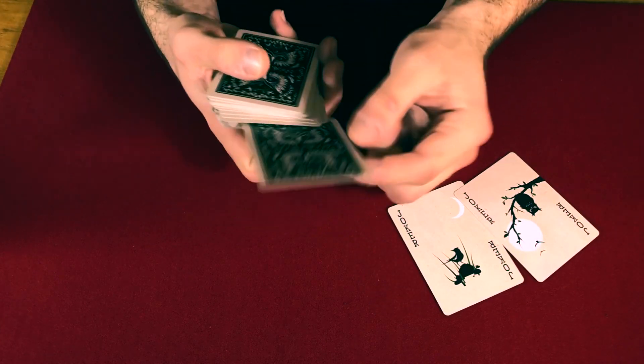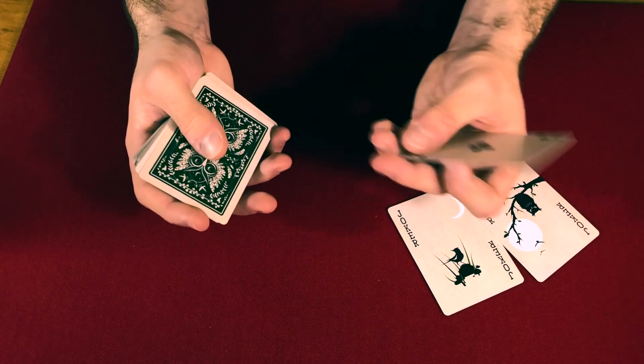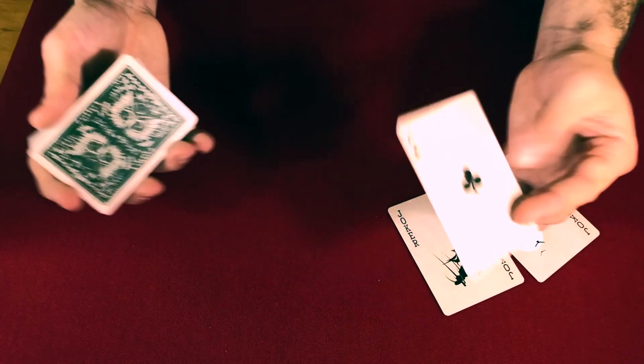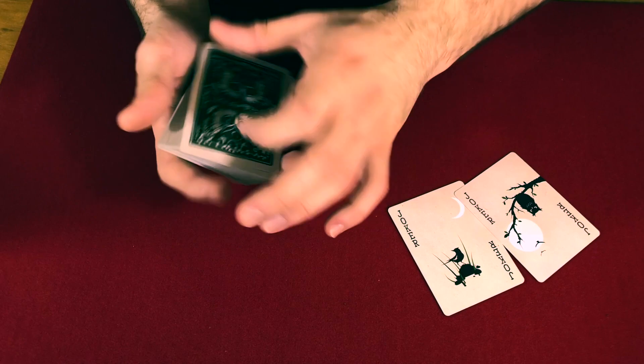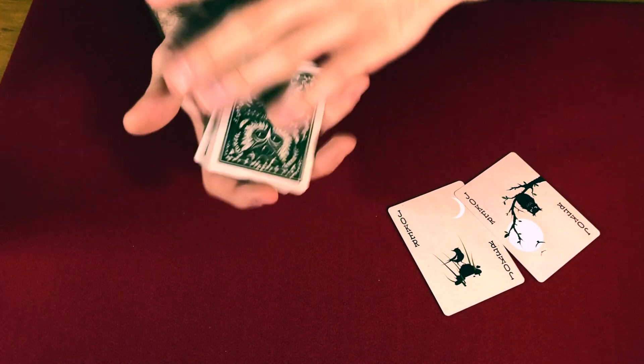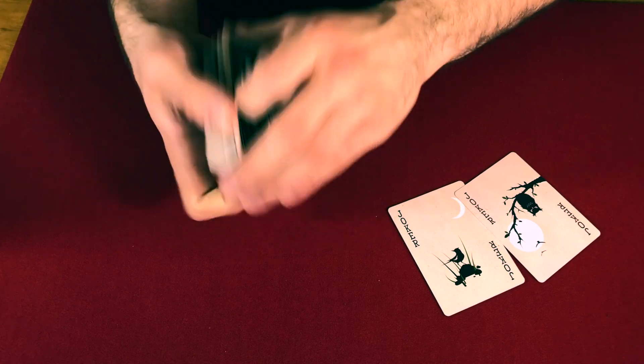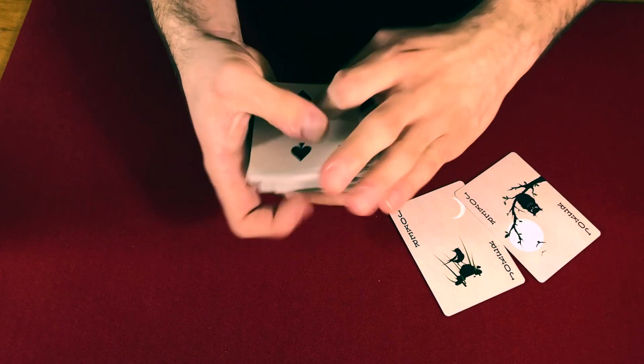So have anybody select any card that they would like. Show that the card is cleanly, fairly selected. Show the card around. You could just have someone say stop, show it around. Whatever you like. So we'll use the Ace of Clubs. Show it around and just control back up to the top of the pack. I'm just using a pass.